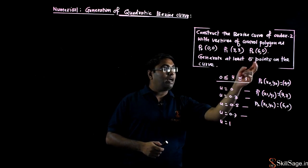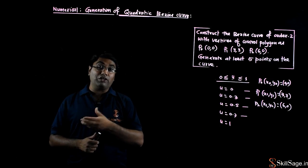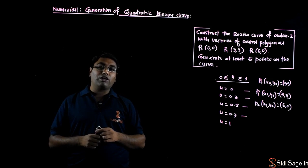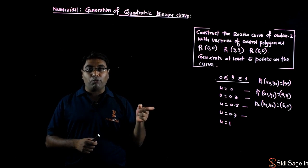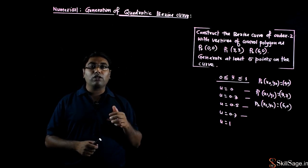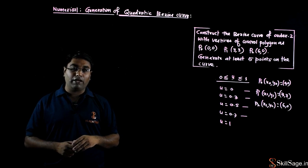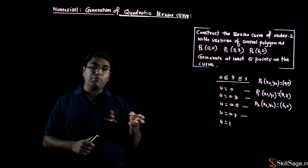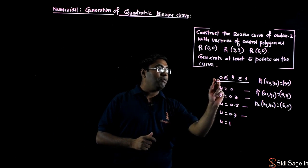हमें curve पर at least 5 points generate करने हैं। Basically कोई भी Bezier curve एक continuous curve होता है, जिस पर infinite points होते हैं। हम infinite points calculate नहीं करेंगे — rasterize करते वक्त specific points calculate करेंगे और उन points को जोड़ देंगे। Parametric curve में parameter की value हमेशा 0 से लेकर 1 के बीच होती है।